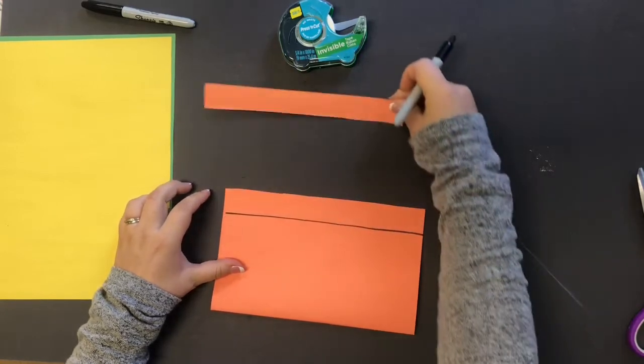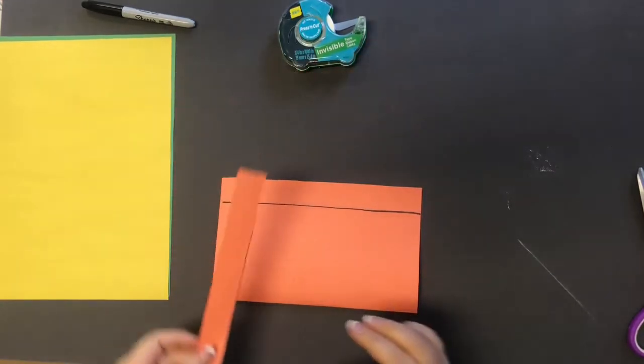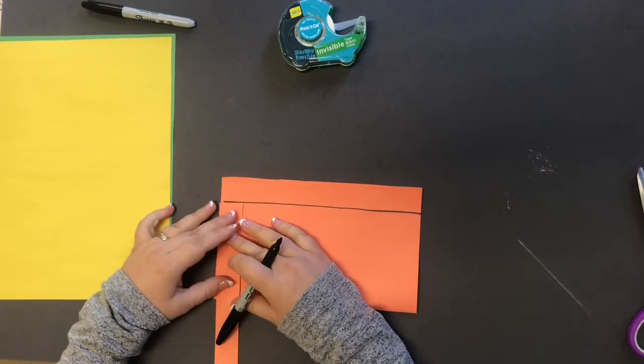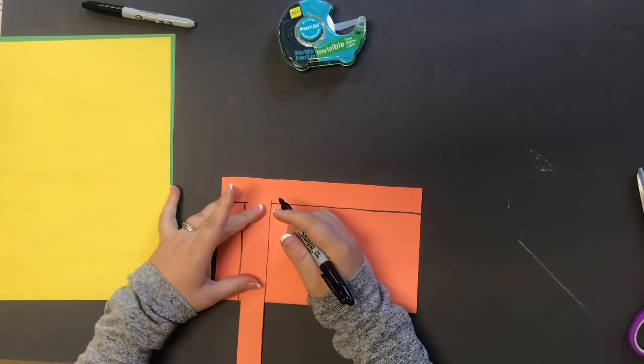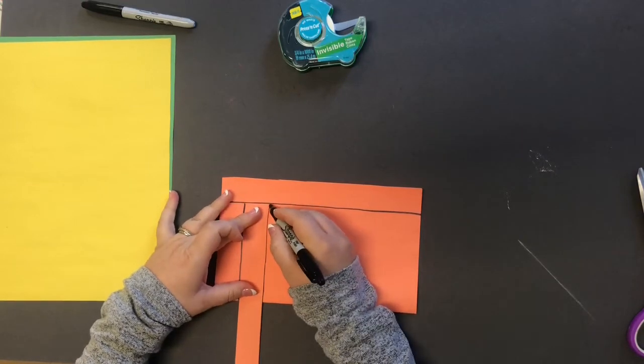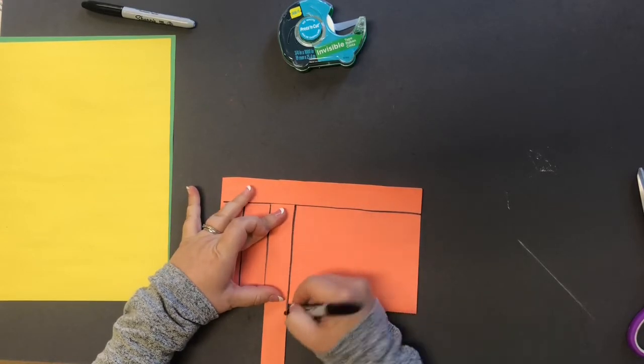You're gonna draw a line and to make the lantern part we're gonna need to copy this line all the way down but notice that I'm lining up the top of that to that line so when I cut I don't want to pass that line right there. So using your strip go all the way across.